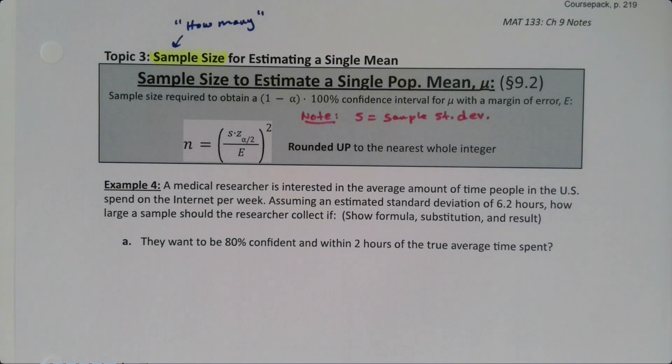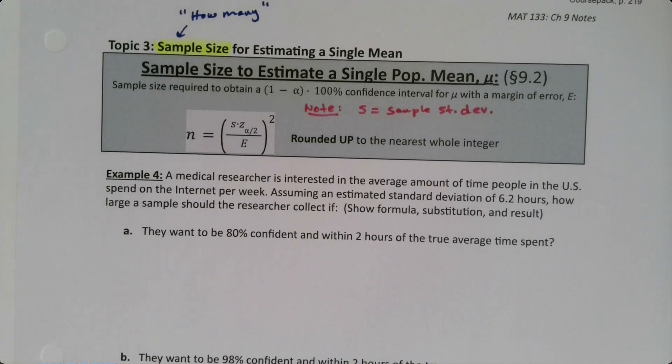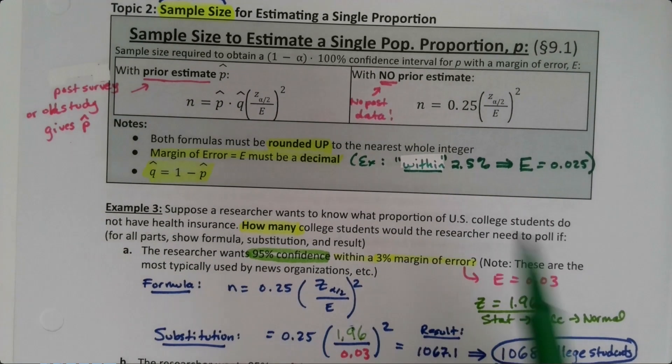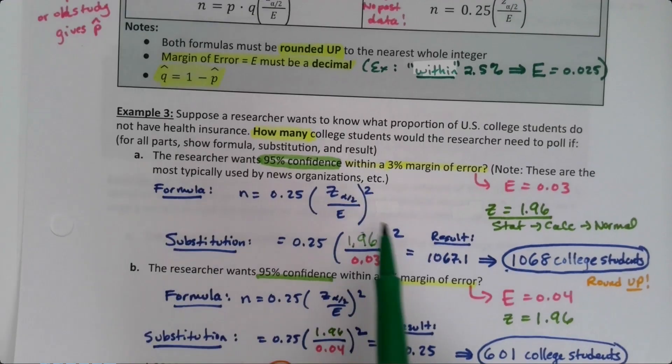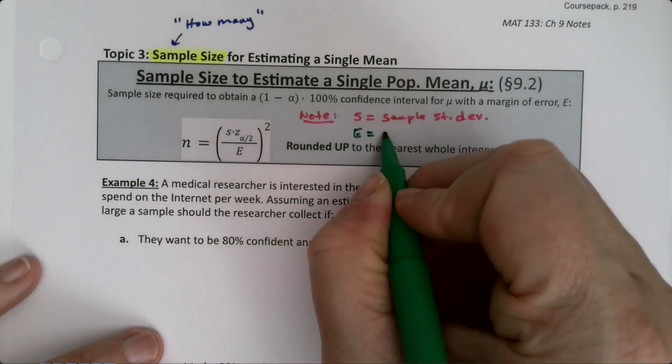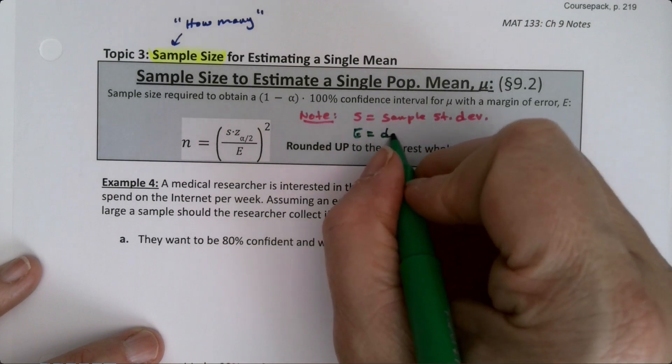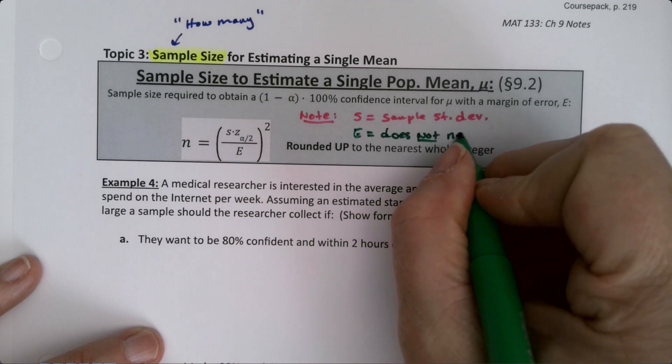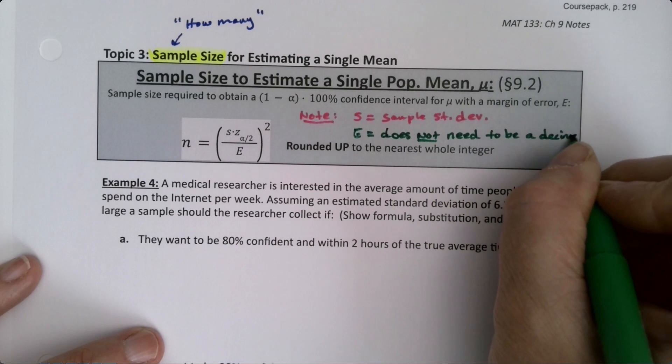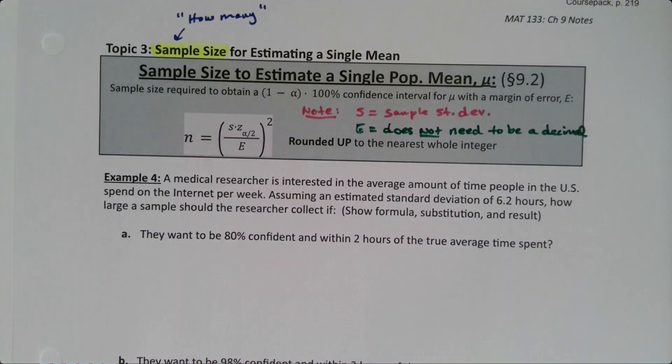And the error doesn't have the percentage thing that it did on the previous page. So in the previous one, because everything's percentages, often the error, most often the error is given as a percentage. So right here, you know, within 2.5% made 0.025 and so on. But that's not the case here. So error is not given, does not need to be a decimal. Let's just put it that way.